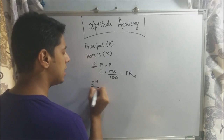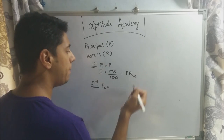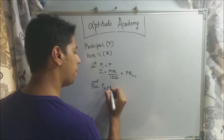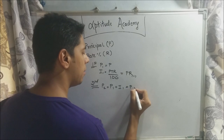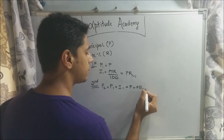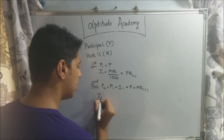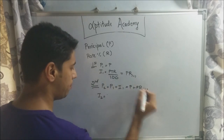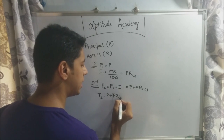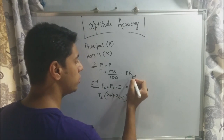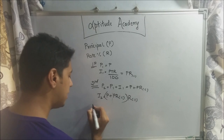In compound interest, the new principal P₂ is the previous principal plus the previous year's interest: P₁ + I₁ = P + Pr%. Then the interest for the second year, I₂, is the current principal (P + Pr%) multiplied by r%.